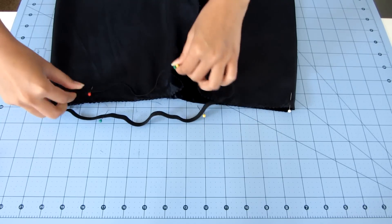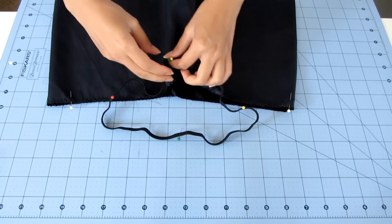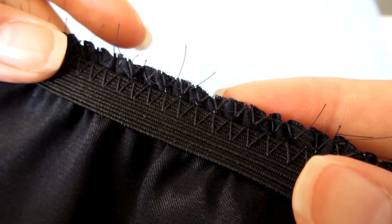The zigzag stitch should attach only the fabric on one side and then the elastic on the other, just like this.